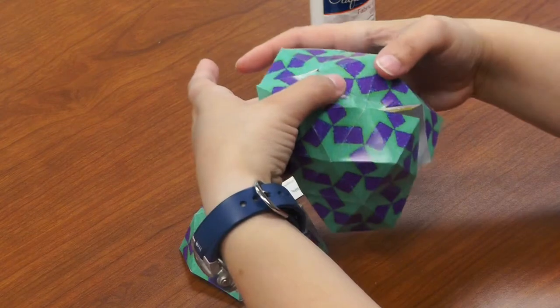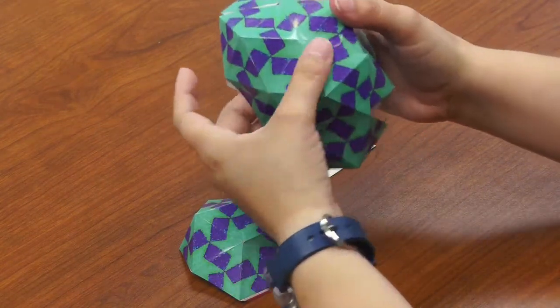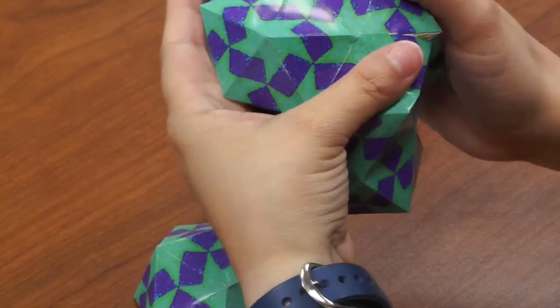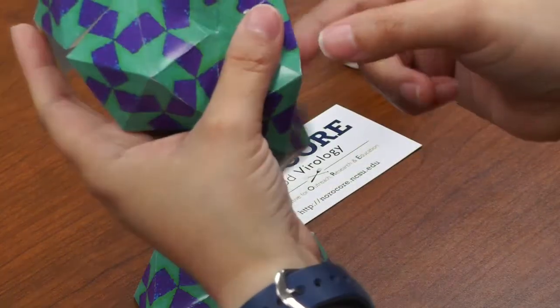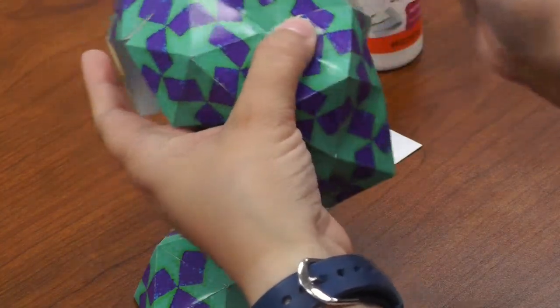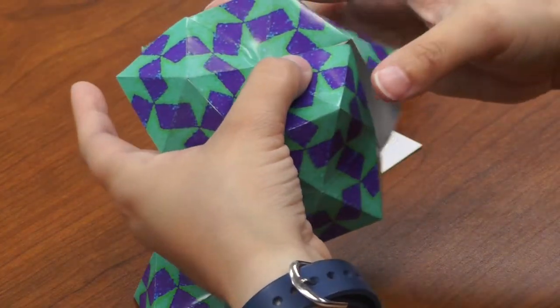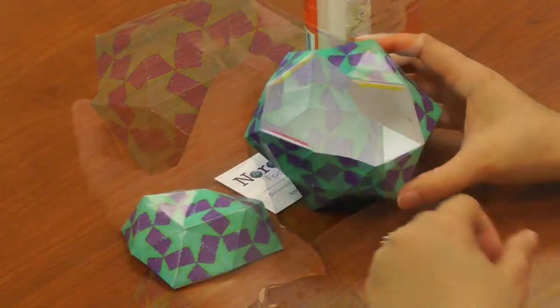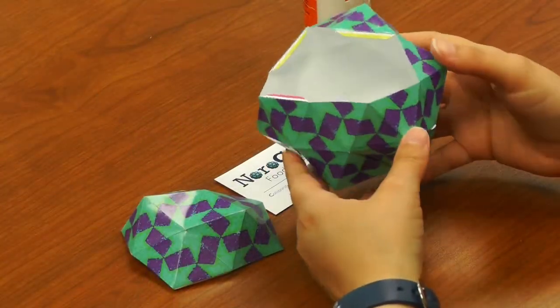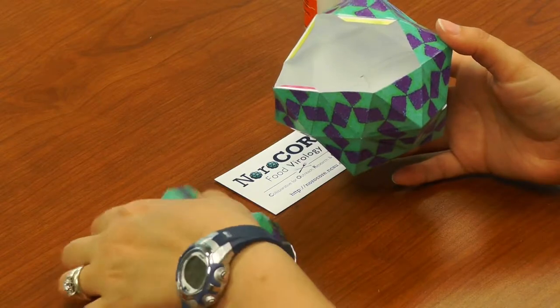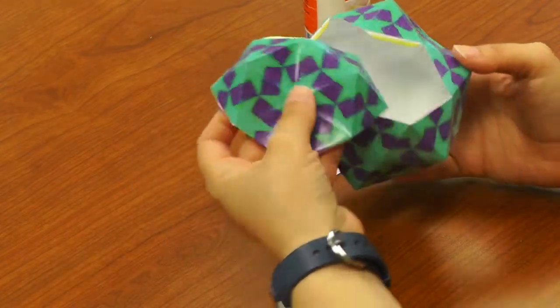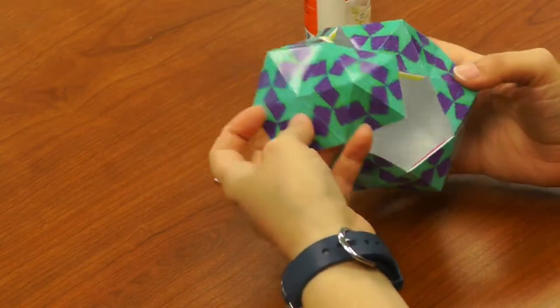You're going to line that one up too and hold it in place. You're going to keep doing this around. Now that you've gotten those two pieces together, there's just the third one left and it only goes in one orientation. There's only one way that it's going to fit.